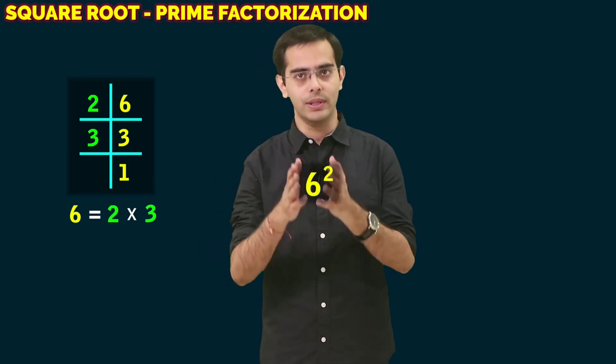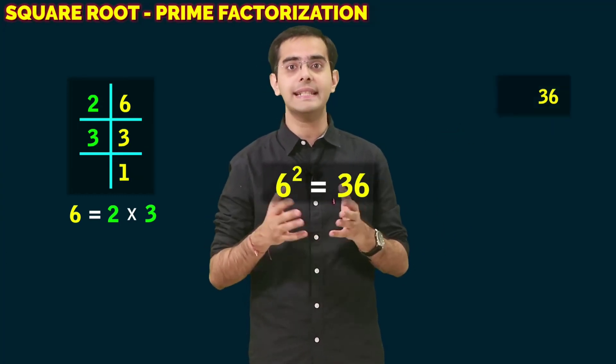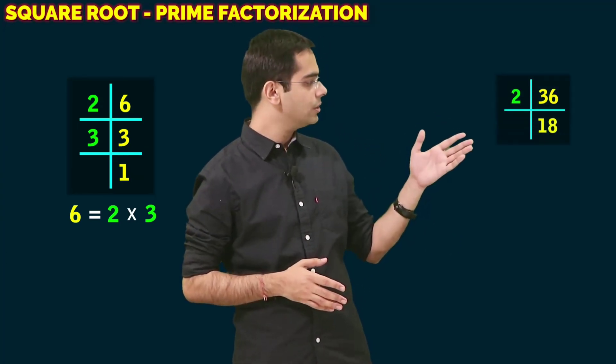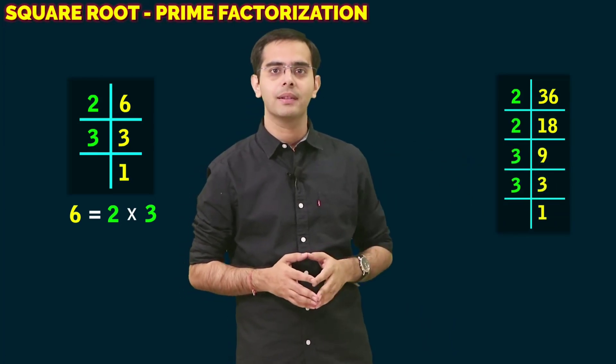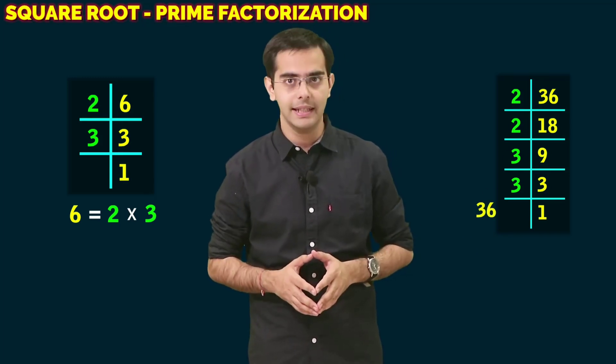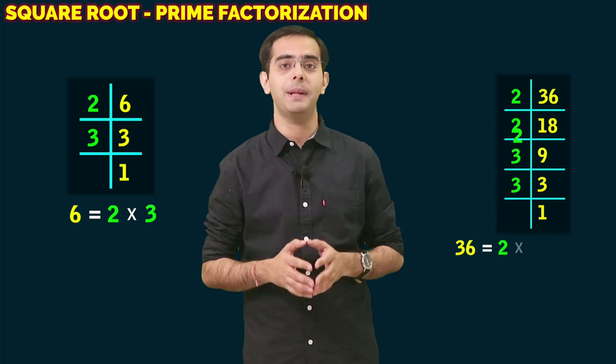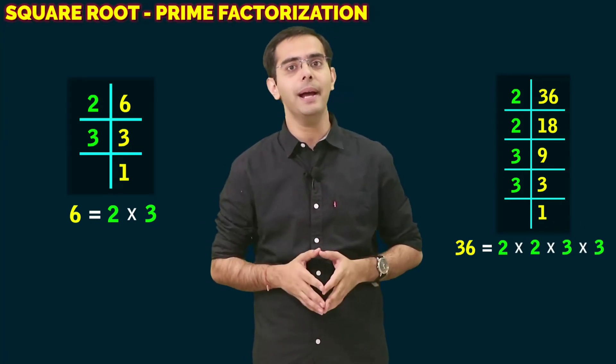Yes, 6² = 36. Now the prime factors of 36 are 2, 2, 3, and 3. That is, the prime factorization of 36 is 36 = 2 × 2 × 3 × 3.